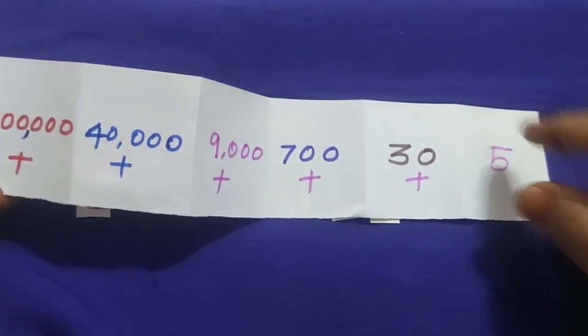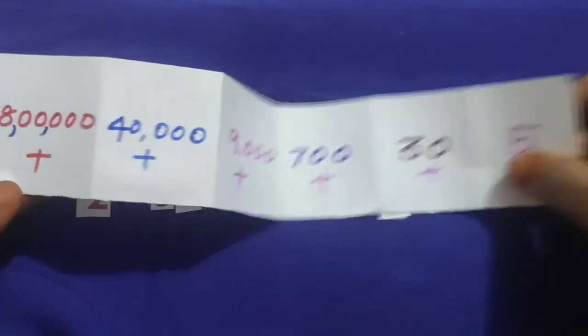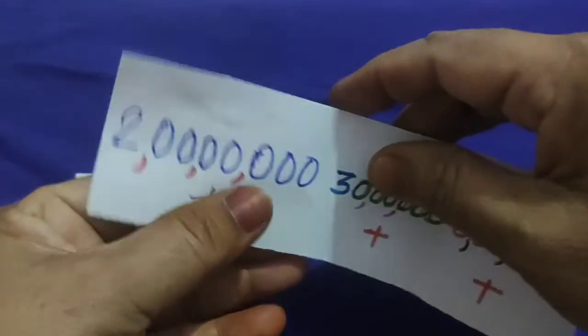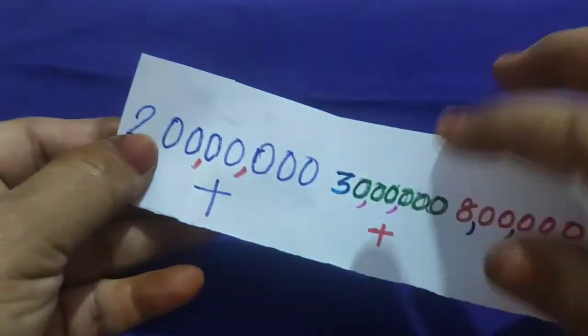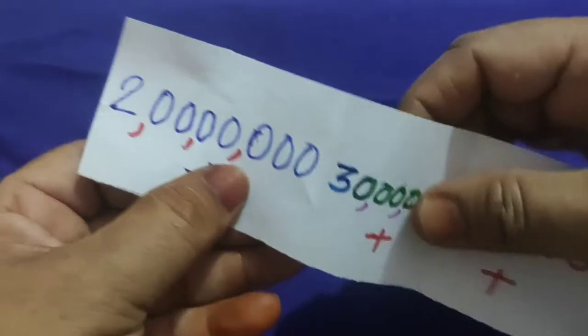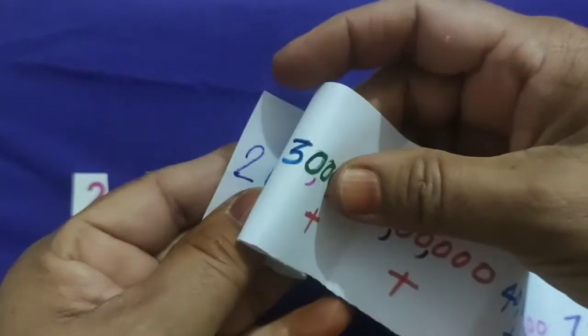Now I am going to hide the zeros. Like that, I am going to fold the number. I am hiding the zeros.